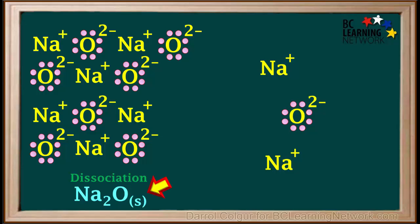The dissociation equation is Na2O solid gives 2Na+ aqueous plus O2- aqueous, which is called the oxide ion.